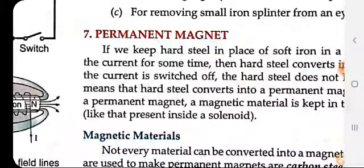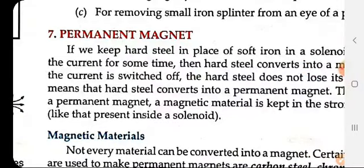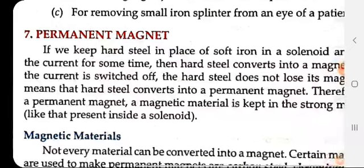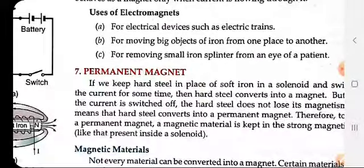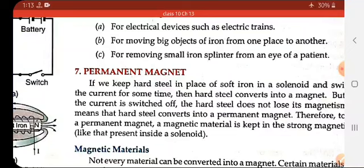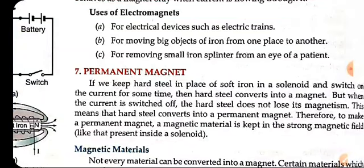Next comes the permanent magnet. What is permanent magnet? It is a magnet which does not lose its magnetic properties. If we keep hard steel in place of soft iron in a solenoid and pass the current for some time, the hard steel converts into magnet.